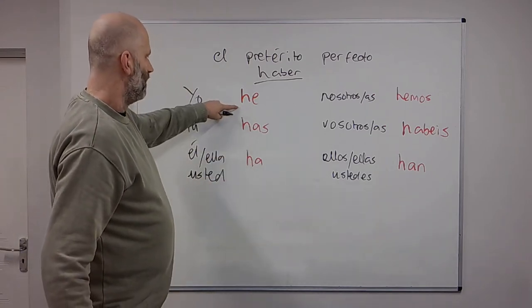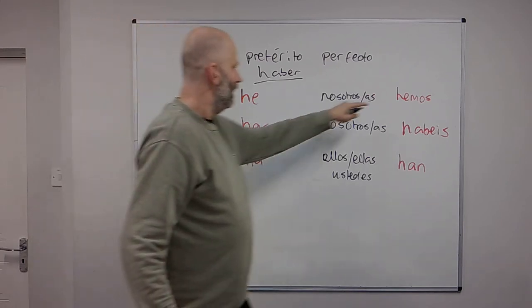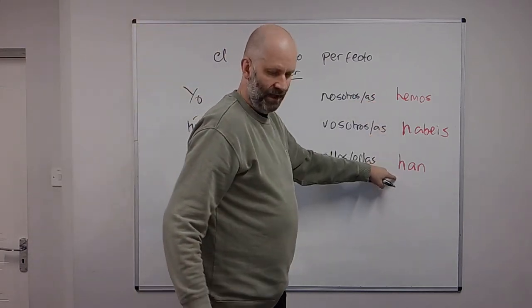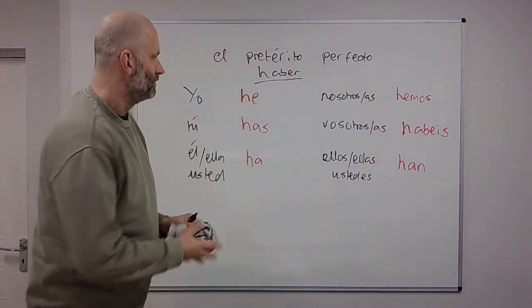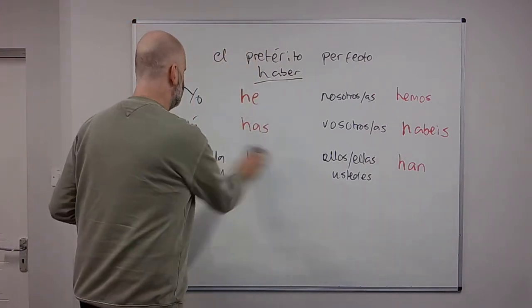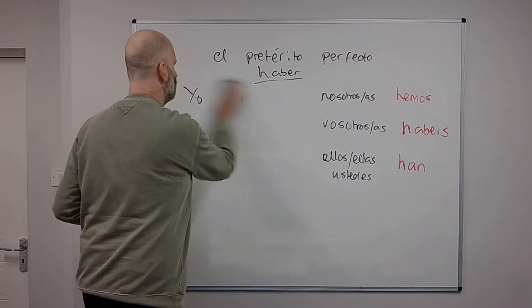But we're going to look at how it's used to make, as an auxiliary, to make the present perfect. So if we just have a practice: he, has, ha, hemos, habéis, han. And then you combine that with the past participle of the verb.